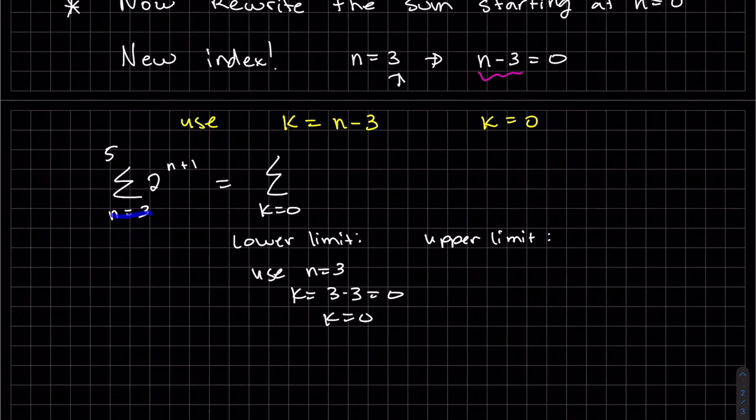And clearly this is... our counter is the variable n. So we're gonna use n equals 5 to plug in to k equals 5 minus 3 right here. So k equals 2.